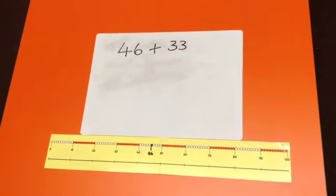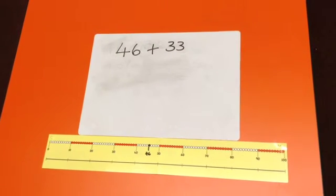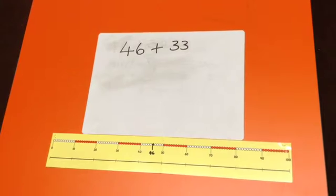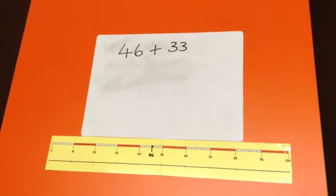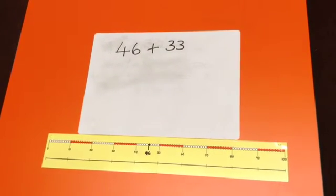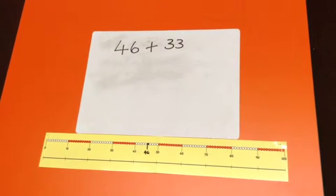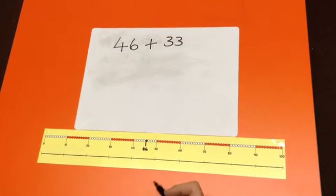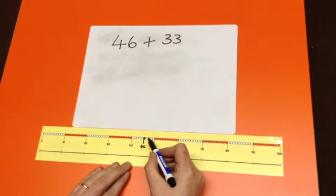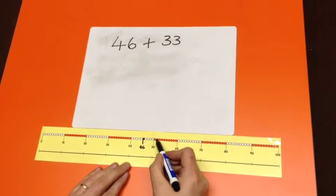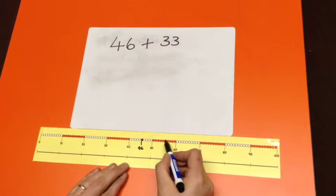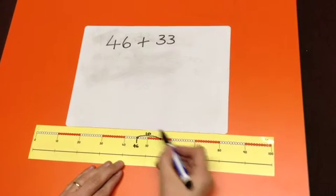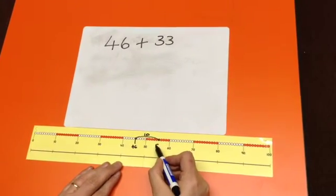We talk a lot about place value of number. In order to add 33, the child needs to understand that 33 is made up of three tens and three units. We start by adding the three tens by counting on from our original number of 46. We've counted on ten, which gives us the number 56.